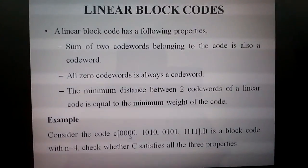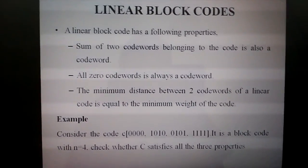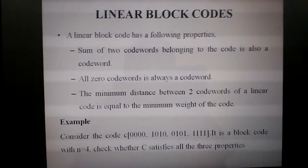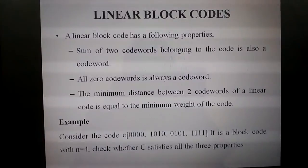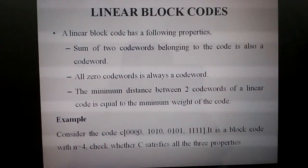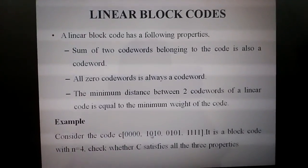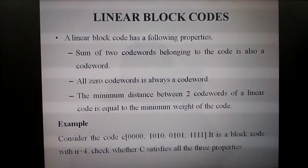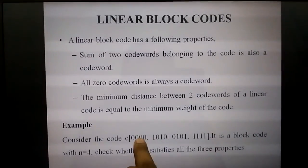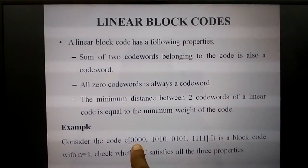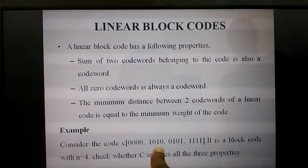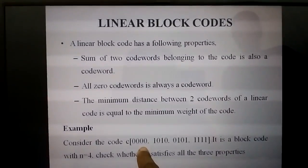First, let's see what minimum distance means. The distance between two code words must be found — just as when finding the distance between two points you need a start and end point, here we need two code words. Take the first code word as 0000 and the second as 1010. We compare these two codes and count the positions where the bits have changed.